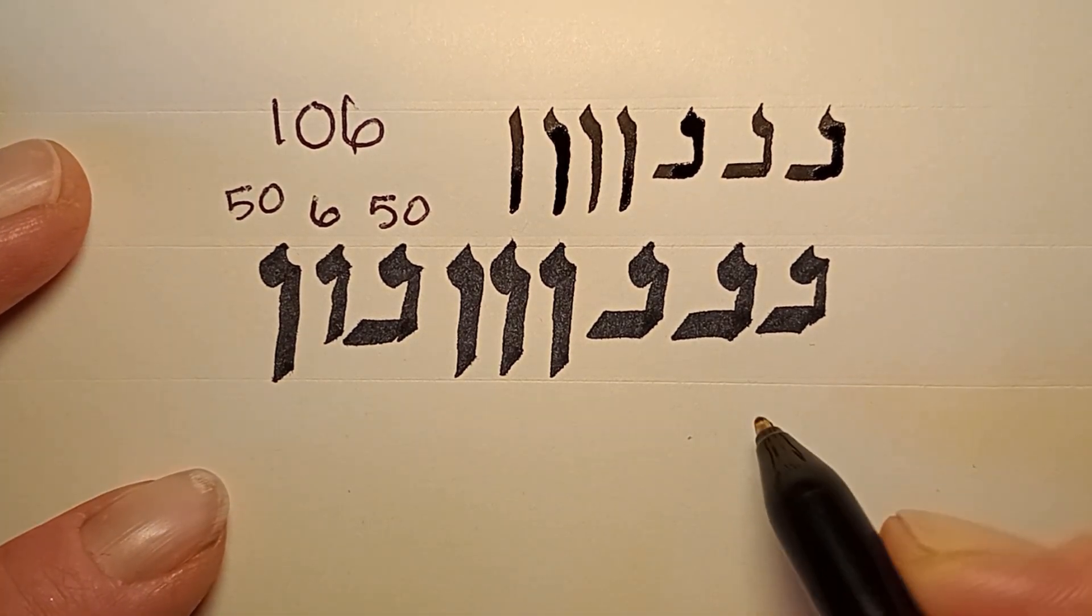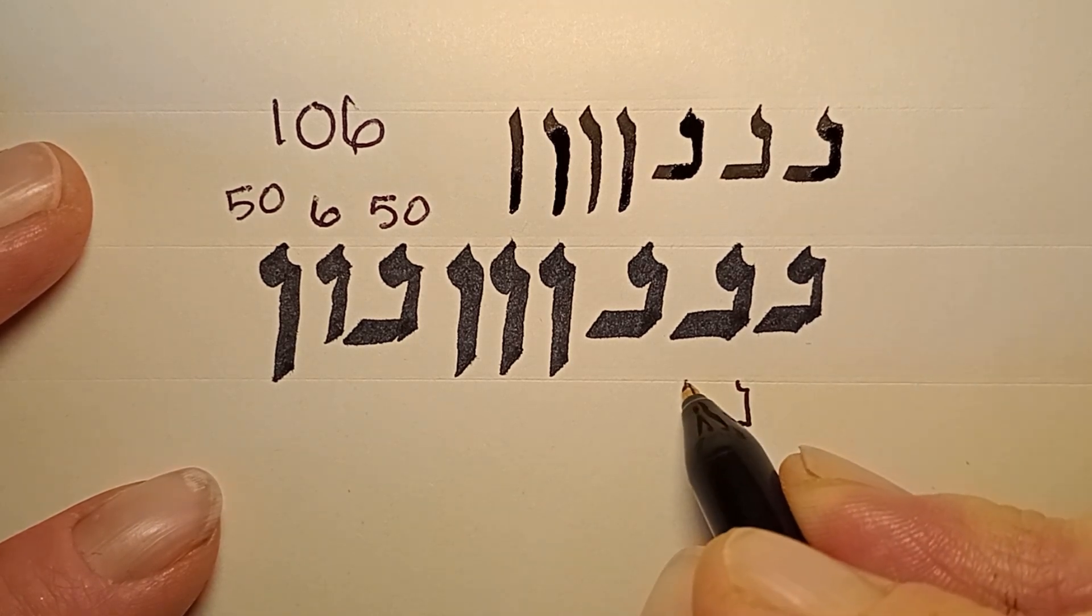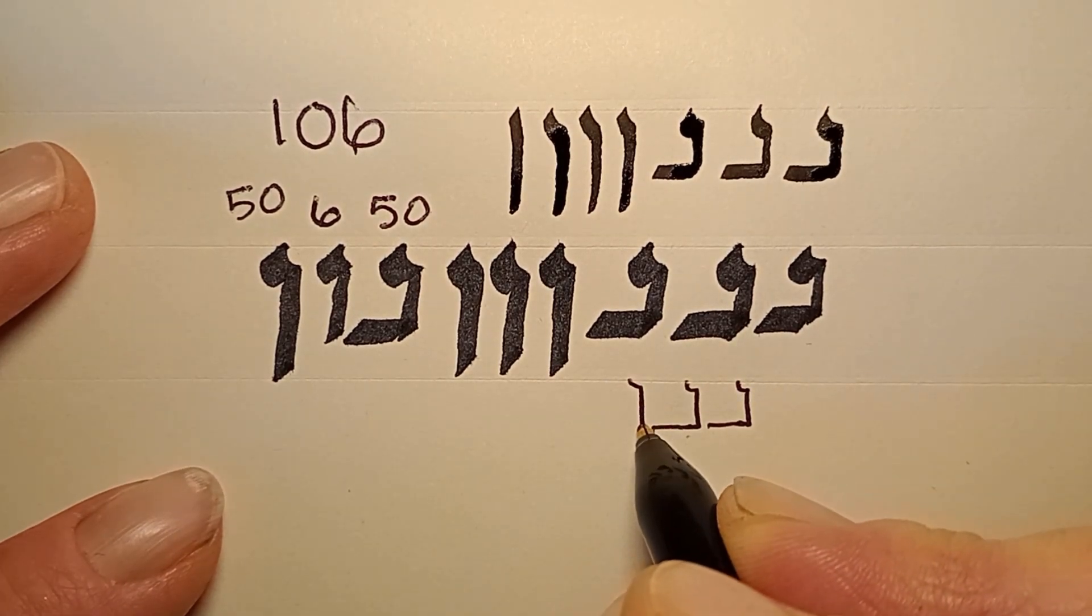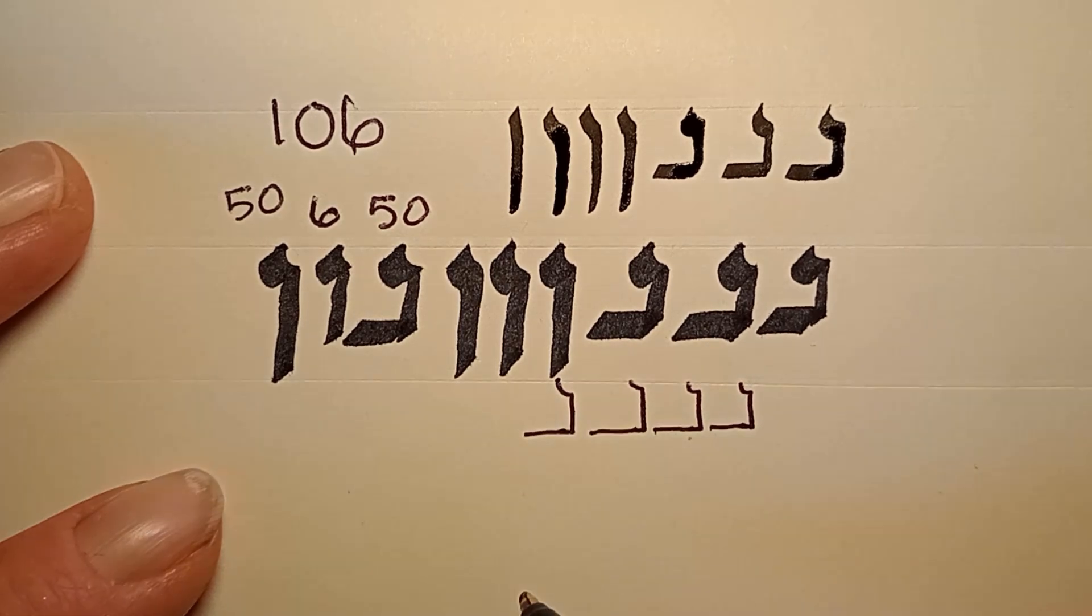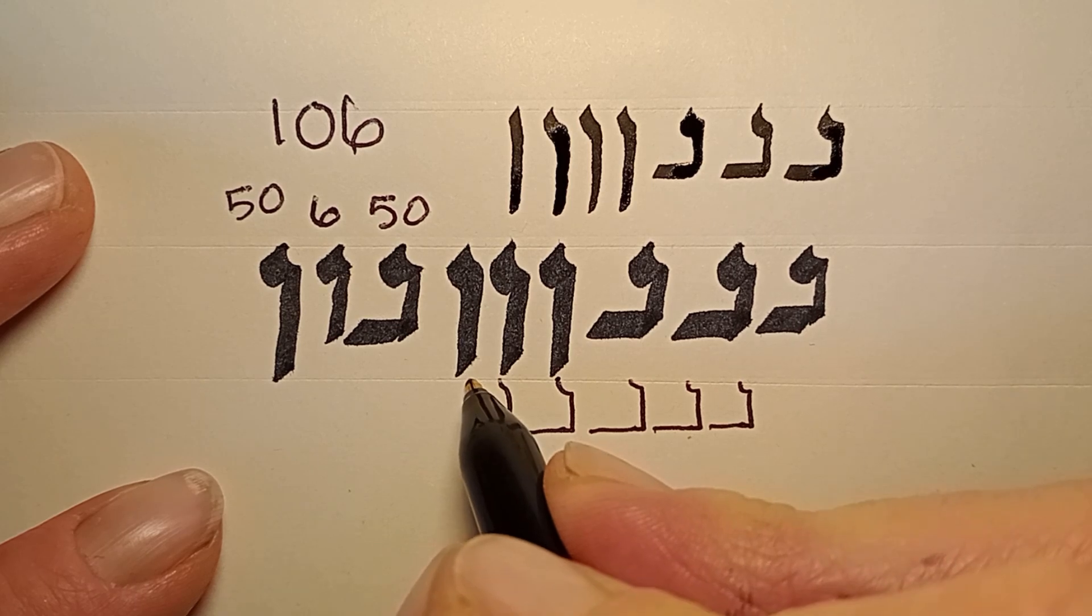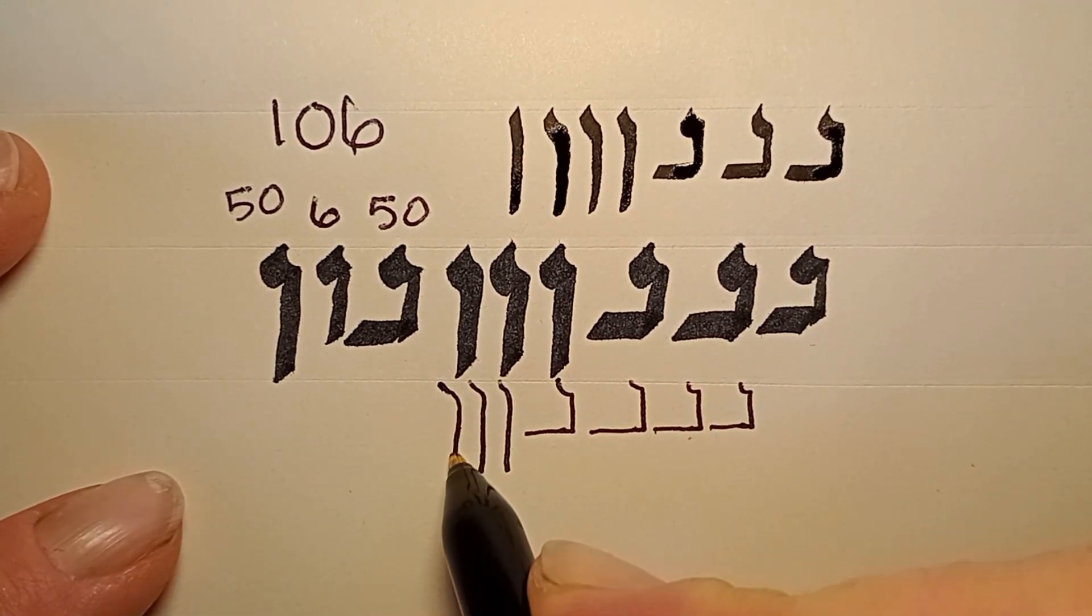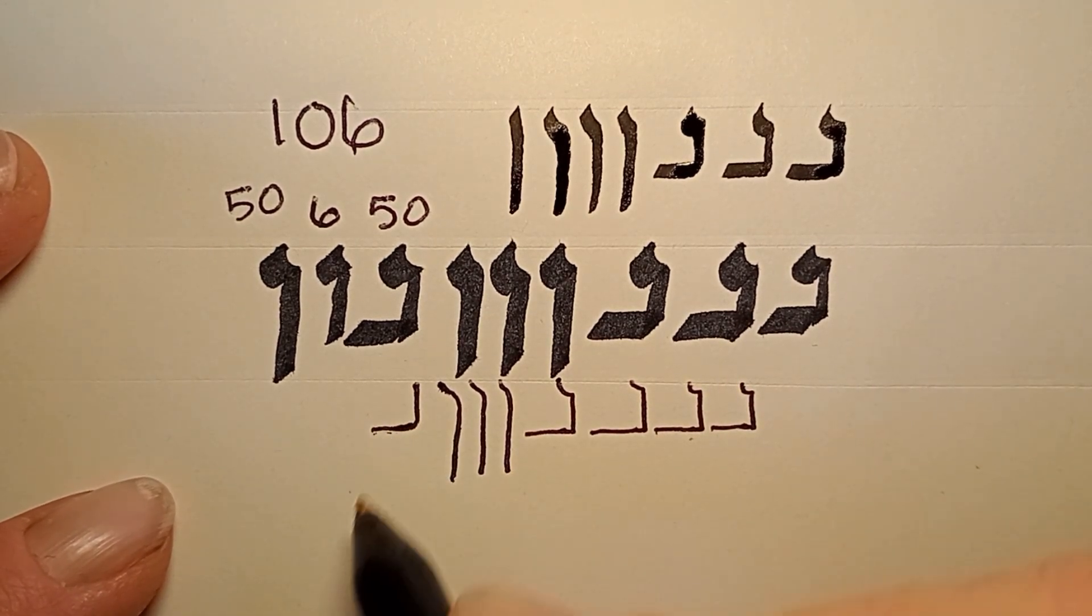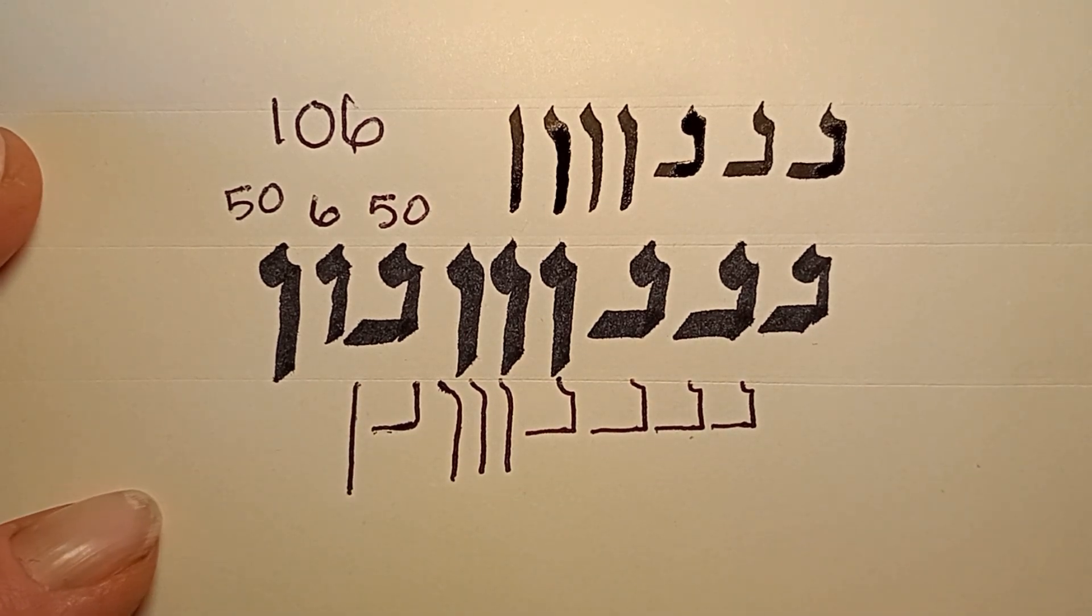Now nun sofit does have a different gematria value attached to it that I haven't been instructed to use yet by my Hebrew teacher. So I'm not going there with it. But in the future, as we go deeper, we can get into that. But for now, it's always best to just go as simplistic as possible with a new language. Get the very basics down.